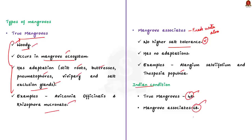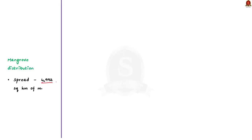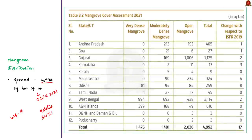India has about 4,992 square kilometers of mangroves according to the Indian State of Forest Report 2021. Mangroves are distributed across 9 states and 3 union territories, with West Bengal having the highest mangrove cover. Compared to the 2019 survey, there has been an increase of 17 square kilometers of mangrove cover. This is positive news, but mangroves still face various threats.